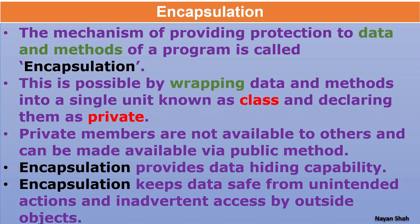In object-oriented programming, data and methods are kept in a unit called class. We can declare any object, attribute, data, or method as private, public, protected, or package. When declared as private, it is not accessible by any other part of the program - private members are not available to others and can be made available only via a public method. So encapsulation provides data hiding capability and keeps data safe from unintended actions and inadvertent access by outside objects.